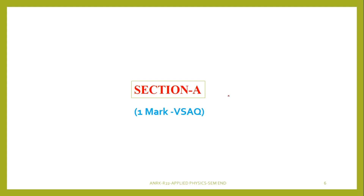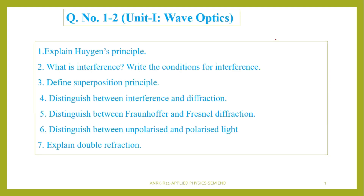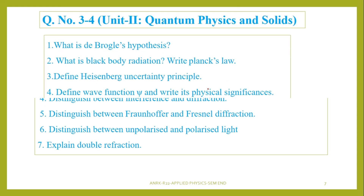Section A consists of one-mark questions; 10 questions will be asked and 10 questions we have to answer. When we come to wave optics, Huygens' principle we have to write, then what is interference and superposition principle, difference between interference and diffraction, Fresnel-Fraunhofer diffraction, unpolarized and polarized light, and double refraction. Whenever they ask for one mark, don't write 2-3 pages — just write whatever is required for that one mark. These are the questions from wave optics.